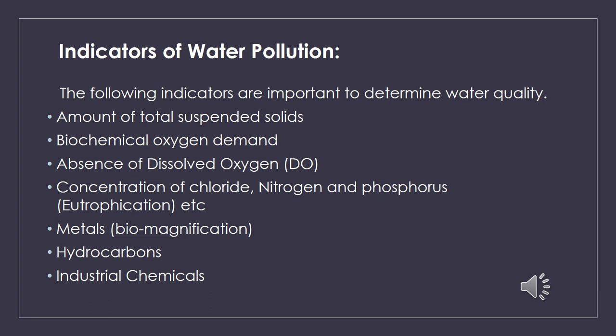Indicators of water pollution — the following parameters are regarded as indicators of water quality. These indicators deal with both biological as well as chemical hazards. The first is the amount of total suspended solids, which are the natural impurities derived from the atmosphere, catchment area, and the soil. Next, we have biological oxygen demand at 20 degrees centigrade.